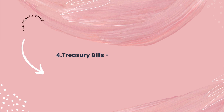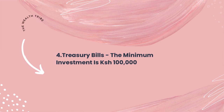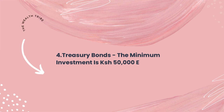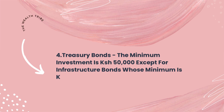The fourth difference is that the minimum investment in a treasury bill is usually 100,000 Kenyan shillings. To invest in a treasury bond, you need a minimum of 50,000 shillings, except for infrastructure bonds whose minimum is 100,000 shillings. And those are the four key differences between treasury bills and treasury bonds.